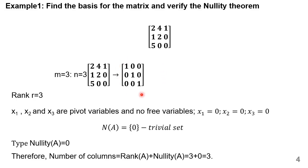When we reduce this matrix, the final echelon form we get is: row 1 [1, 0, 0], row 2 [0, 0, 0], row 3 [0, 0, 1]. Not a single row gets eliminated, so we can write that Rank(A) = m = 3. We have 3 pivotal elements — 1, 1, 1 — and corresponding to these pivot elements, we have the variables x1, x2, and x3.